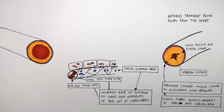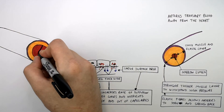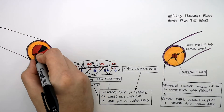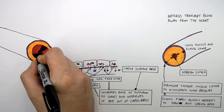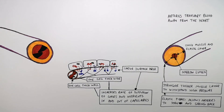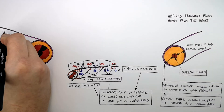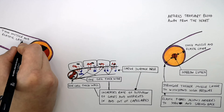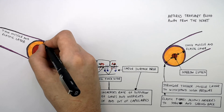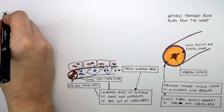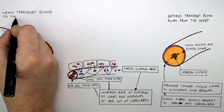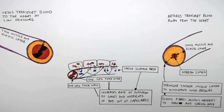Veins have got valves to prevent the backflow of blood. Arteries do not have valves. Veins have a thin muscle and elastic layer because they transport blood to the heart at low pressure, so they don't have to withstand the high pressures that arteries need to withstand.